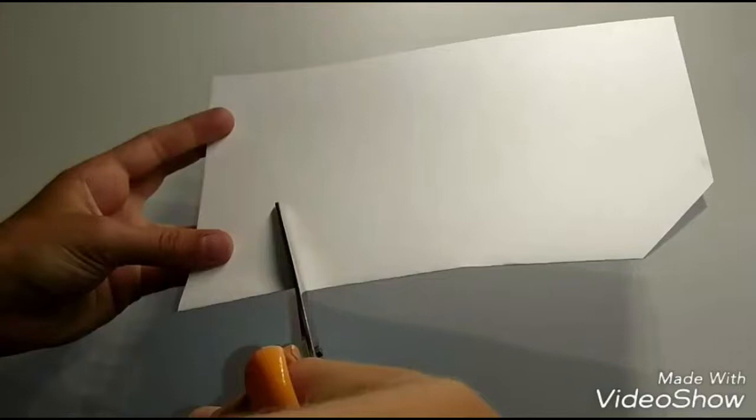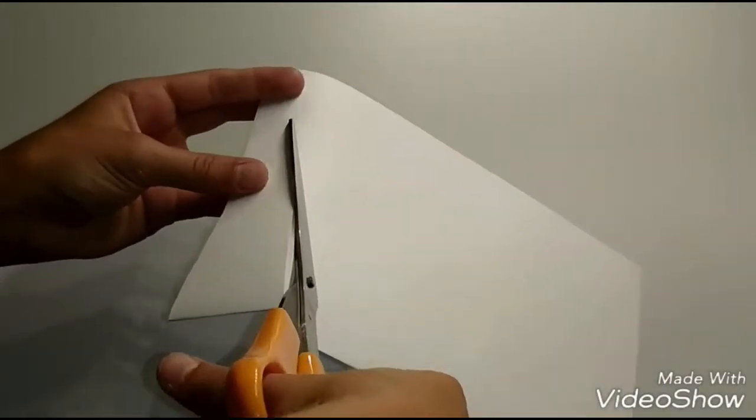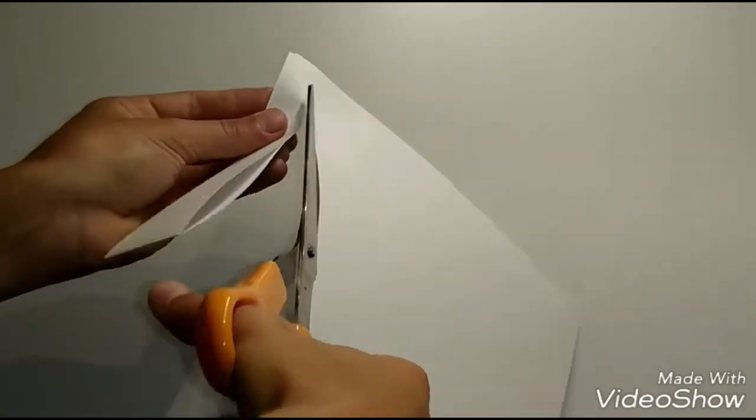Then cut a bigger triangle. And this is going to be the wing. So you can see how I'm doing it. And then I'm just going to round off the end some so that it isn't as sharp.